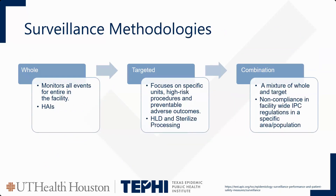Now how do we conduct surveillance? In healthcare systems, there are three typical methodologies: whole, targeted, or combination. Whole surveillance entails looking at the entire facility for a specific monitored event. We usually use this for big-tier items such as healthcare-acquired infections, hand hygiene, isolation compliance, and antibiotic prescribing. These are examples of whole surveillance topics.